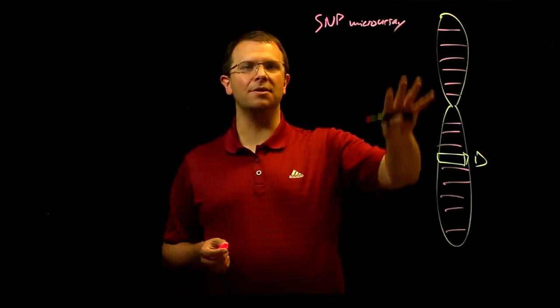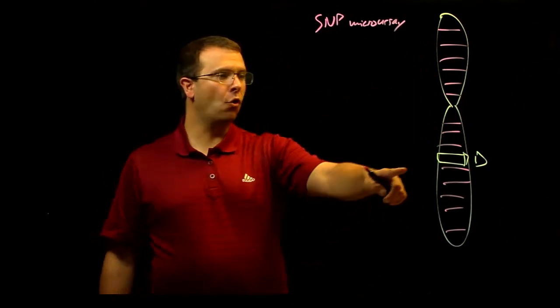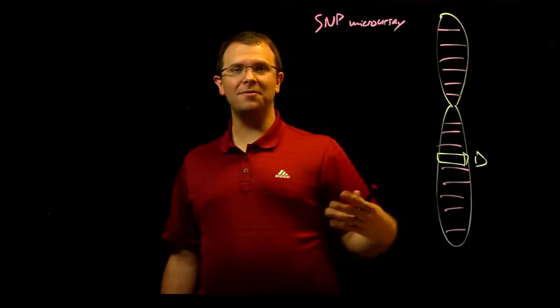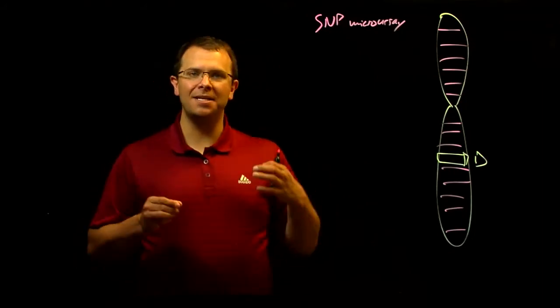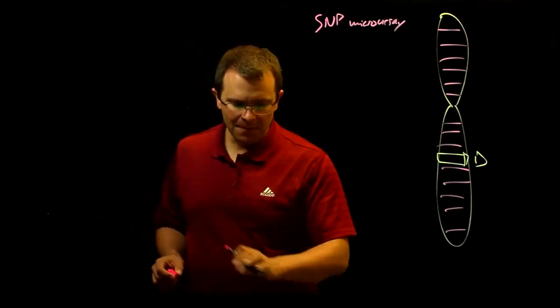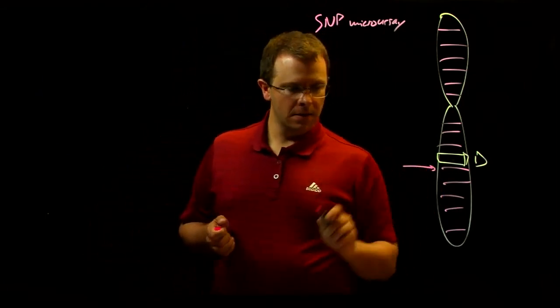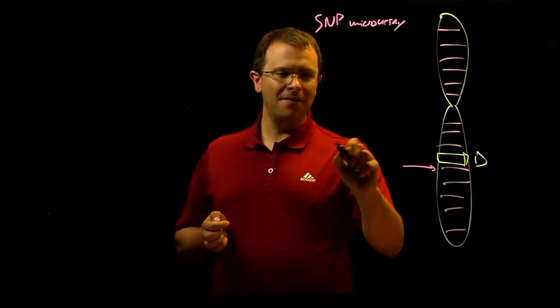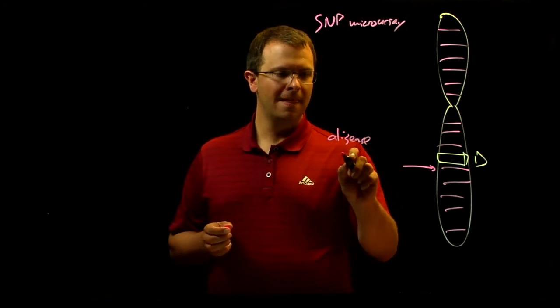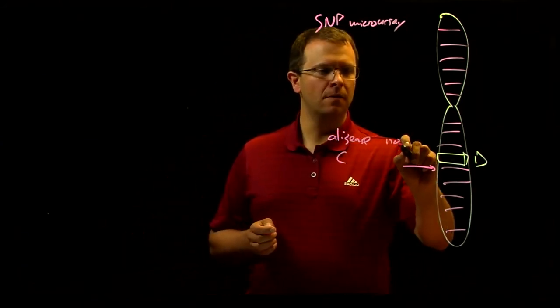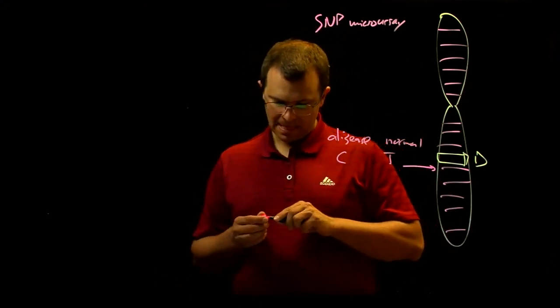But in some of these loci, a person's genotype is correlated with whether they have the disease. And in some of these loci, the person's genotype is not correlated. And so let's say that you find a locus right here where all of the people who have the disease have a C and all of the people who don't have the disease have a T.